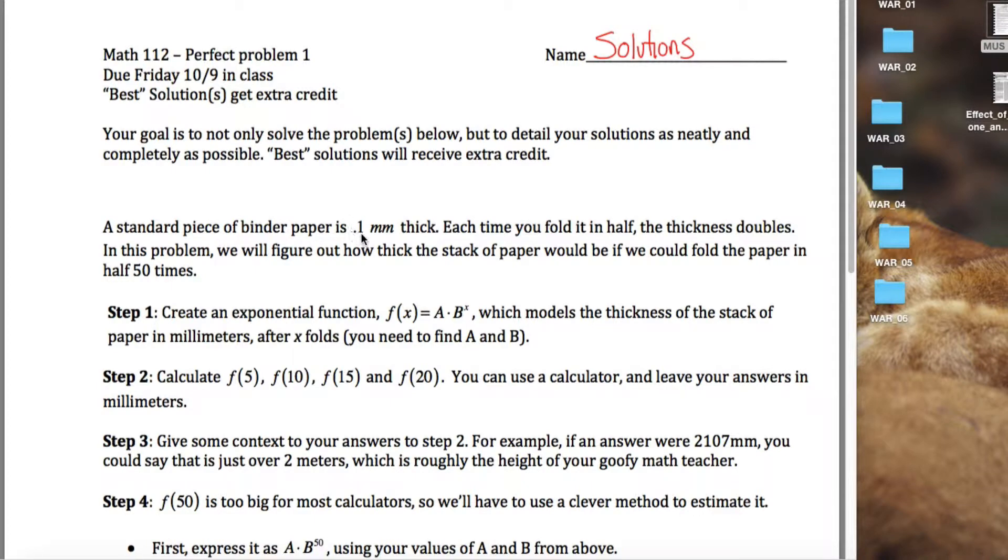The basic idea is that we have a piece of paper that's 0.1 millimeters thick, and you fold it in half, so now it's twice as thick, and you fold it in half again, it's twice as thick as it was, and again and again and again. And so we can model the thickness of the paper using an exponential function.